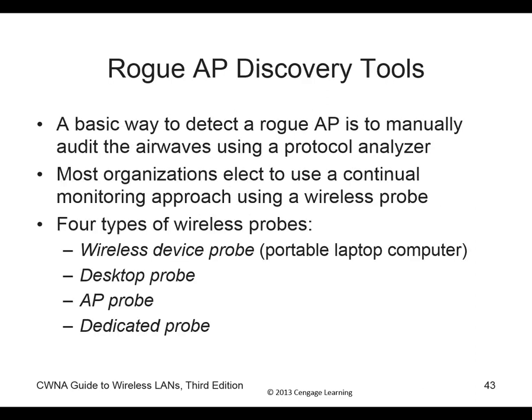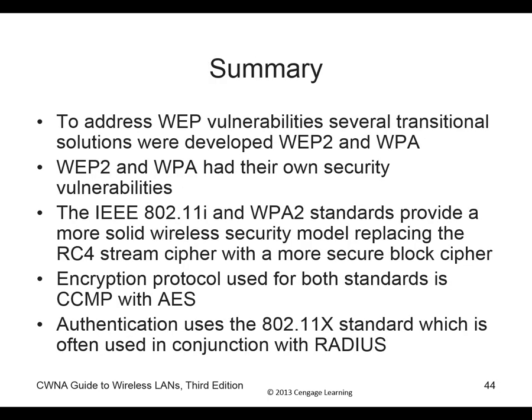Rogue access point discovery tools let you look at the airwaves via protocol analyzers such as Wireshark, pulling a lot of information and gaining insight into the network. There are four different probe types: wireless probe using a protocol analyzer on a wireless computer, desktop probe, dedicated probe, and access point probe.